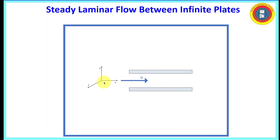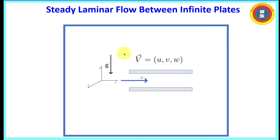First, let's note our coordinate axis: x, y, and z directions, where y equals 0 is at the midpoint between the two plates. The velocity vector is a standard Cartesian velocity vector with u, v, and w being the x, y, and z components. Gravity is in the minus y direction. We will assume the pressure gradient in the x direction is less than zero, consistent with the x component of velocity u in the positive x direction.